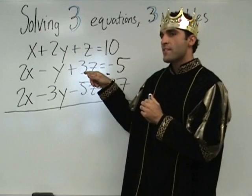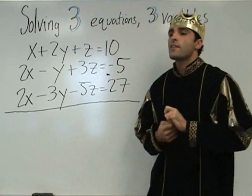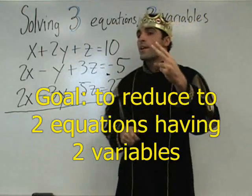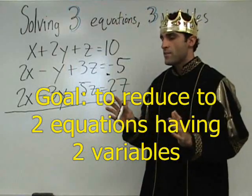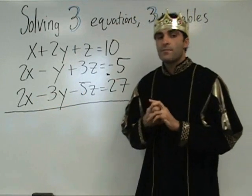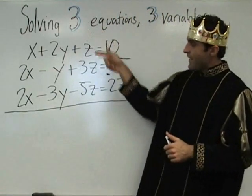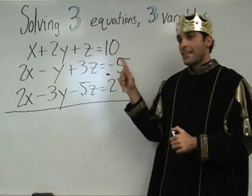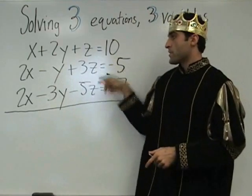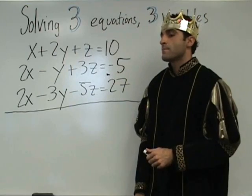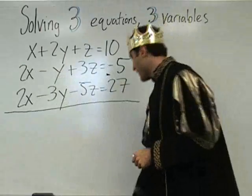So, how many equations do you see? Three. How many variables do you see? Three. So here's the goal: the goal is to get into two equations with two variables — any two equations, any two variables. So we've done elimination before. Let's look at this and pick any two equations and eliminate one variable. Which one do you want to do? The bottom two. Let's eliminate x — we could do anything we want. It looks like these x's are waiting to be eliminated.